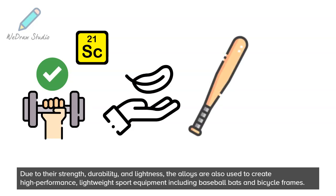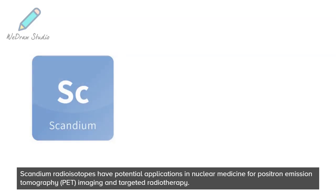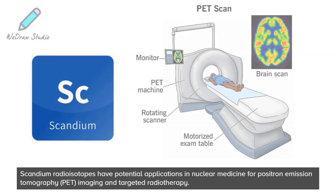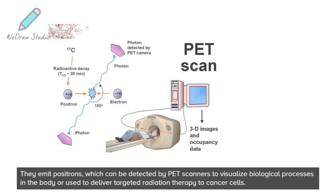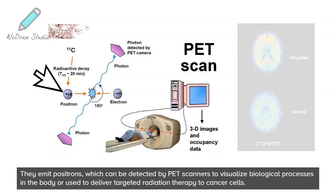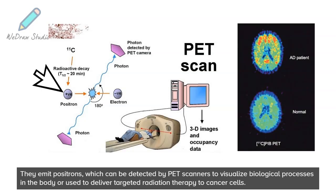Scandium radioisotopes have potential applications in nuclear medicine for positron emission tomography imaging and targeted radiotherapy. They emit positrons which can be detected by PET scanners to visualize biological processes in the body or used to deliver targeted radiation therapy to cancer cells.